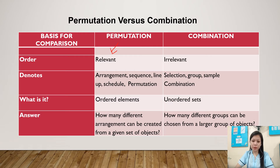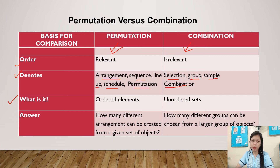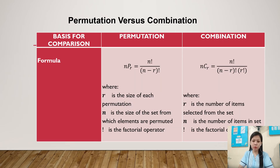In permutation, the order is relevant, while in combination the order is irrelevant. Permutation denotes arrangement, sequence, line-up, and schedule, while combination denotes selection, group, and sample. In permutation it involves ordered elements, while in combination it involves unordered elements. Permutation asks how many different arrangements can be created from a given set of objects, while combination asks how many different groups can be chosen from a larger group of objects.